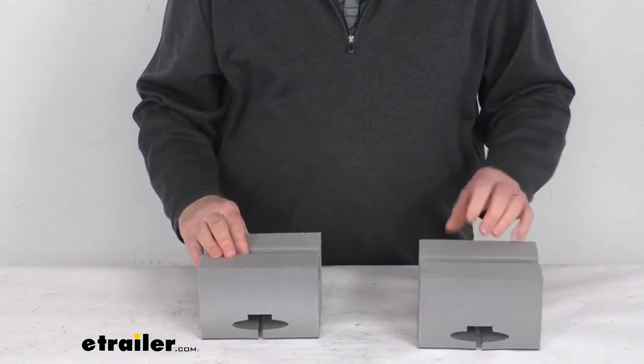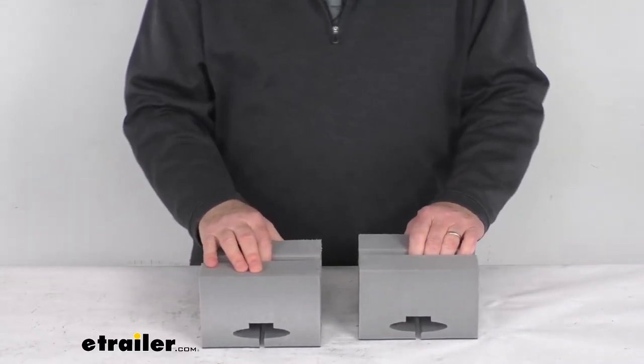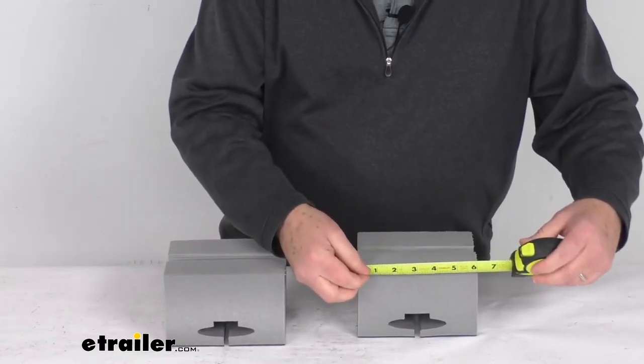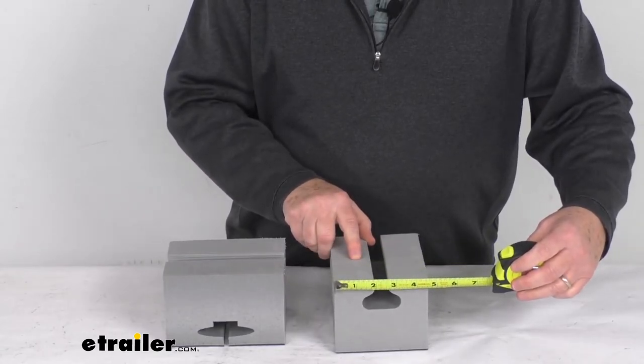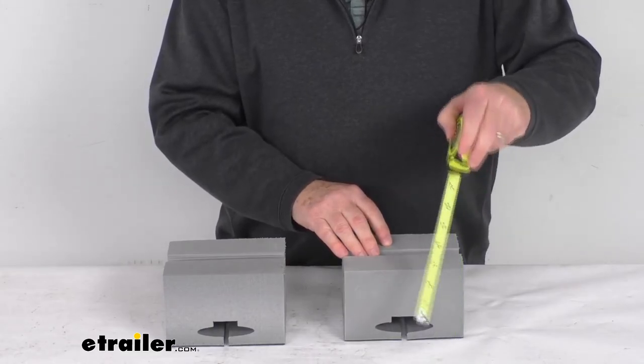These parts are made in the USA. A few specs: again, it's for a carrying capacity of one canoe. Overall dimensions on each block: the width is right at six inches by four and three-quarter inches, and the overall height is right at four inches tall.